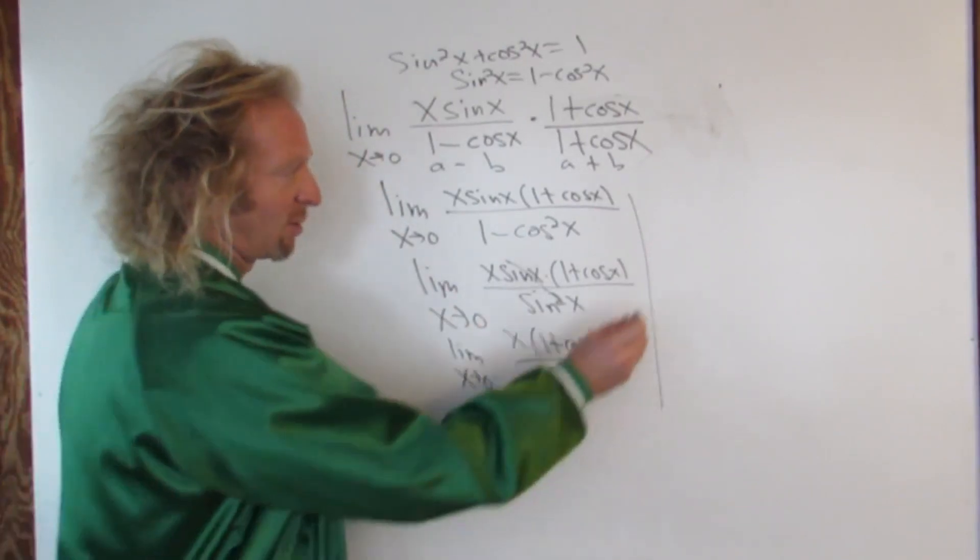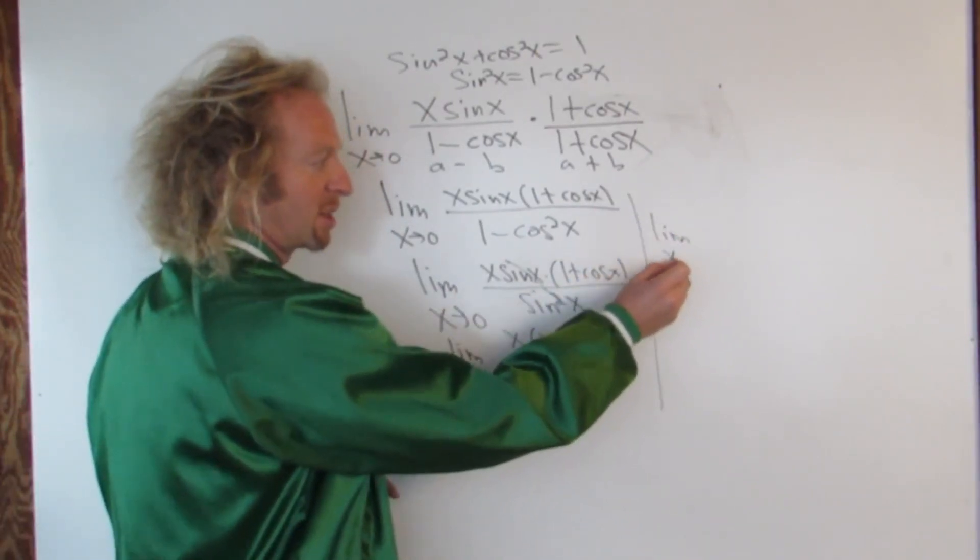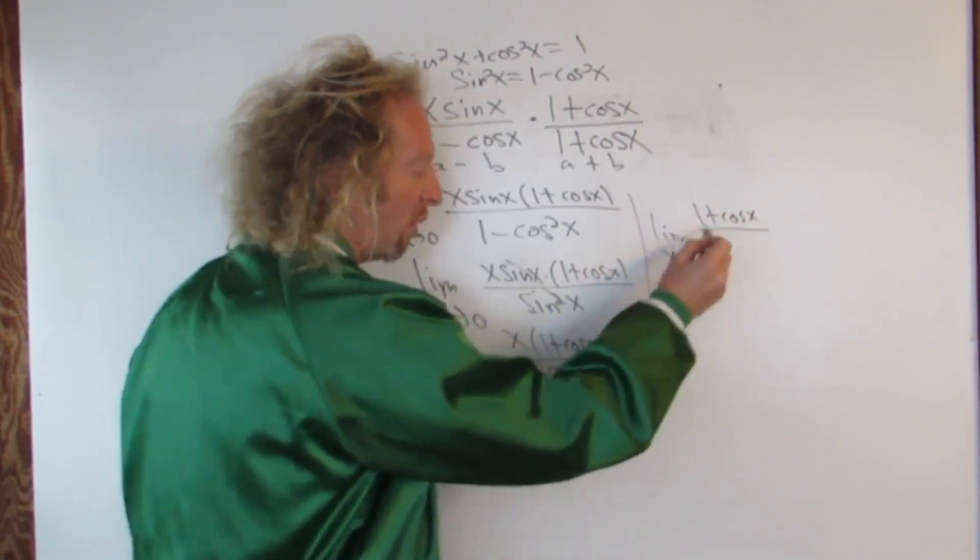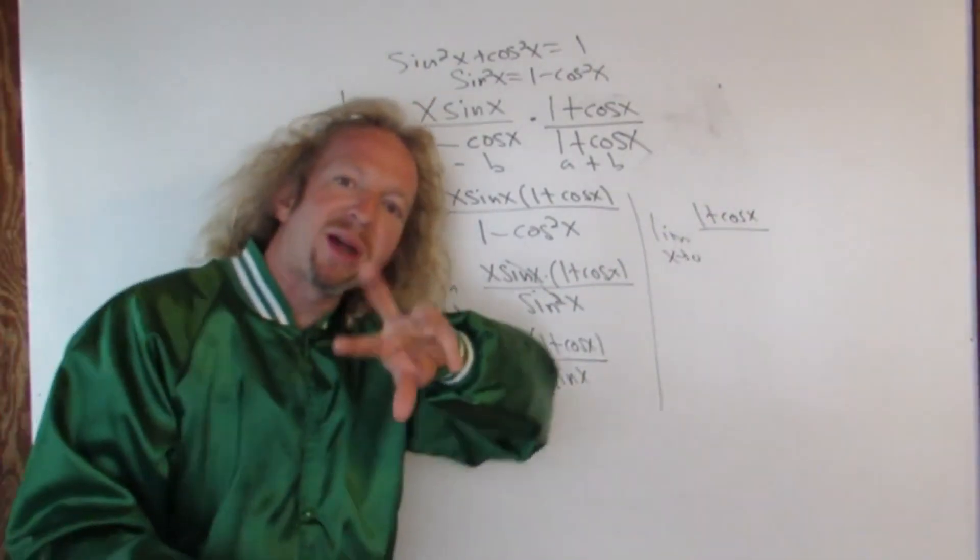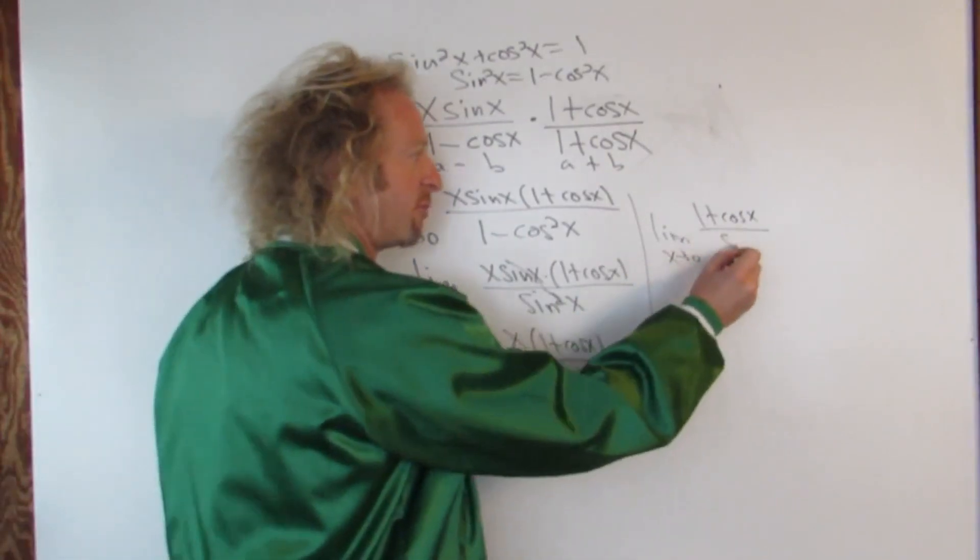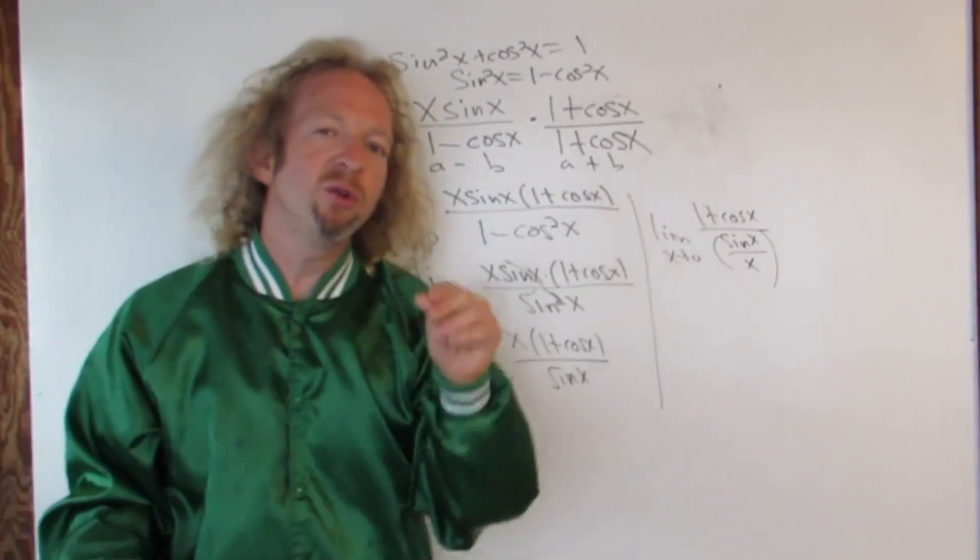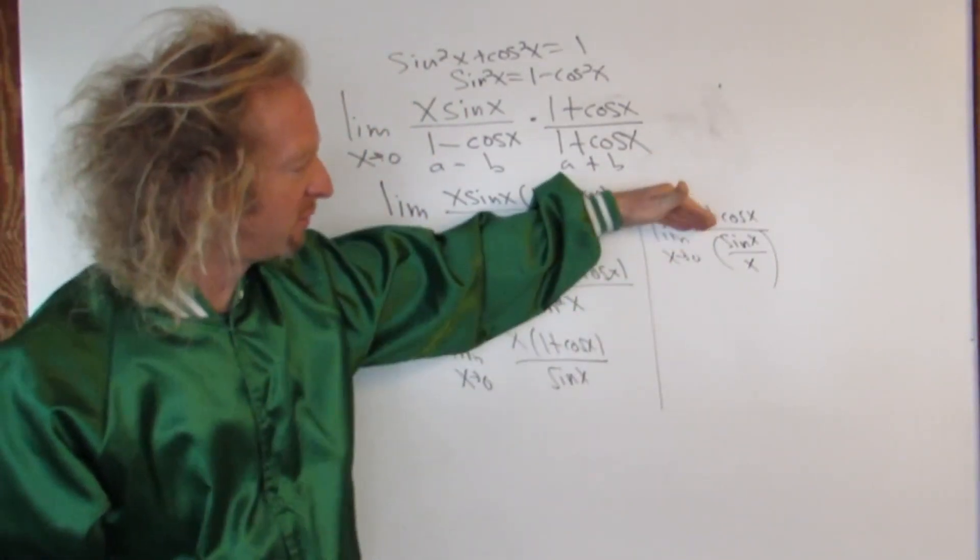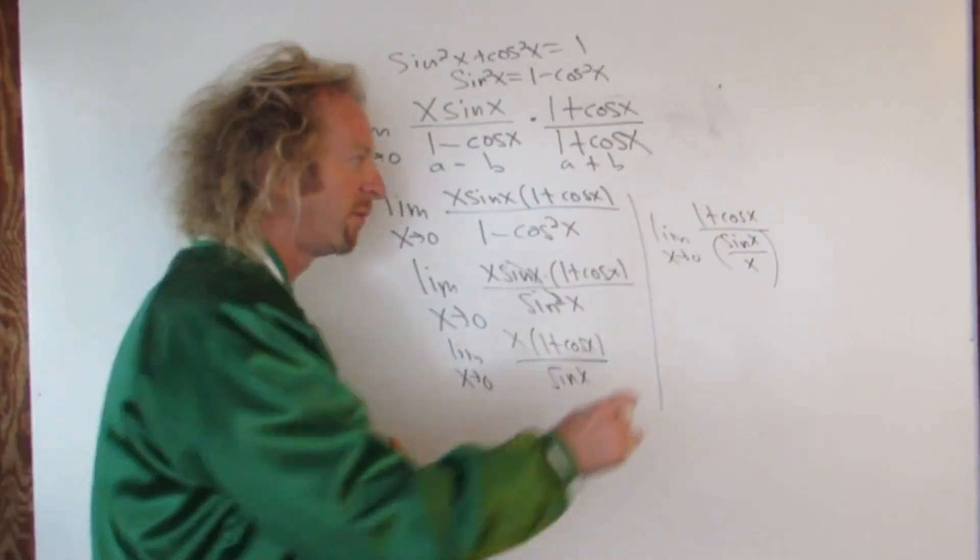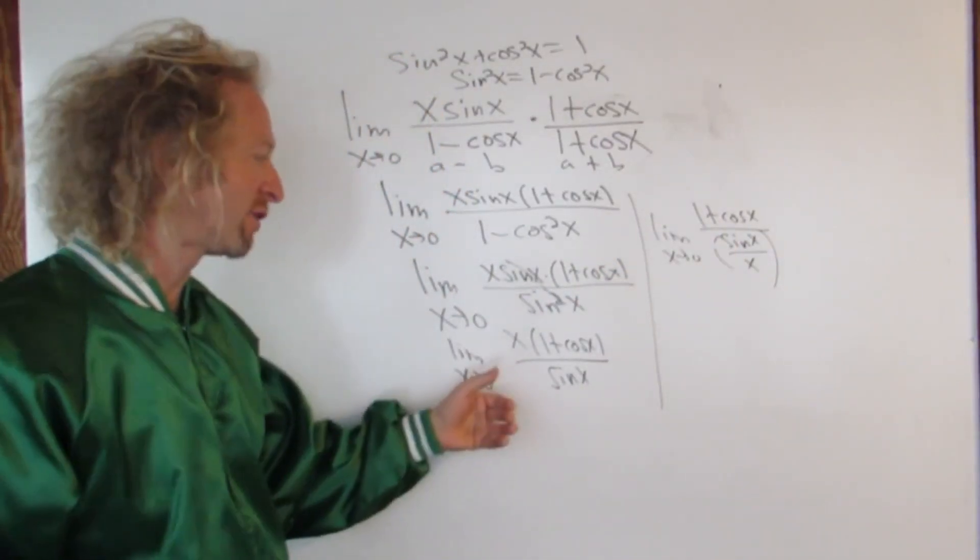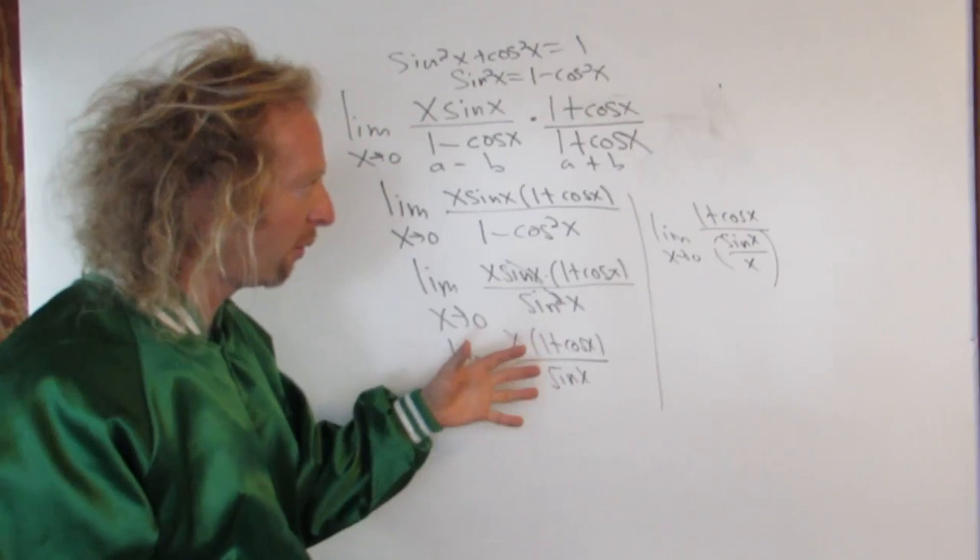This is x over sine x. I'm going to write this as limit as x approaches zero of one plus cosine x over, and check this out, I'm going to flip it. We're going to write it as sine x over x like this. We can do that because when you divide, you multiply by the reciprocal. So division is multiplication by the reciprocal. So when we're dividing by sine x over x, we're really multiplying by x over sine x. It looks okay.